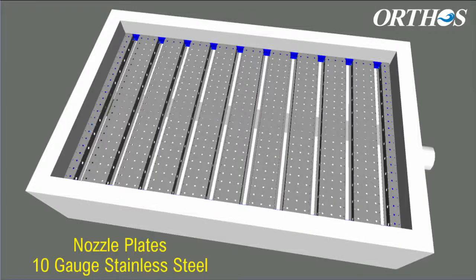Maximus free flow filter underdrain is constructed of resilient 10-gauge stainless steel. Chemically anchored to the filter floor using stainless steel hardware for a quick installation.